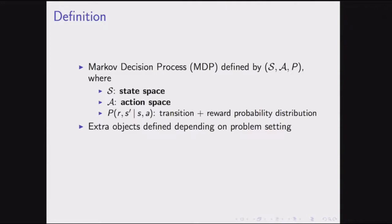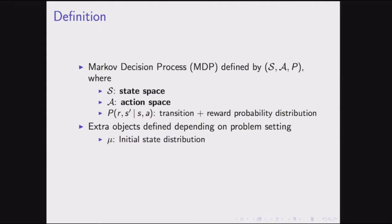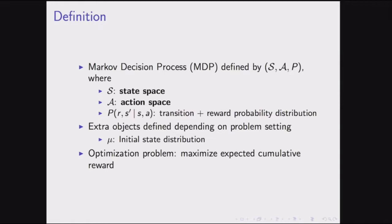Additional objects include an initial state distribution — the world starts in a certain state. The typical optimization problem given this MDP is to maximize expected cumulative reward; there are various ways of defining that more precisely.